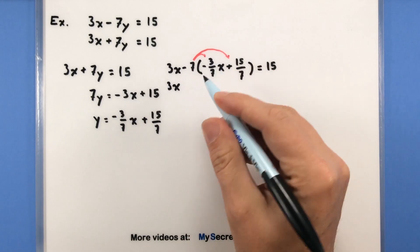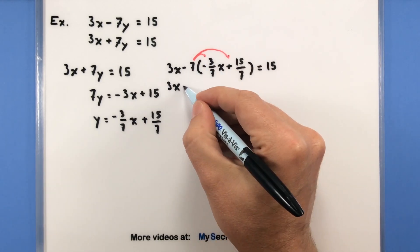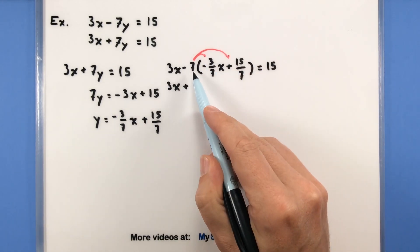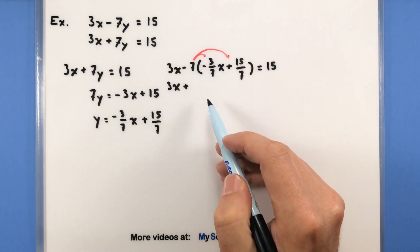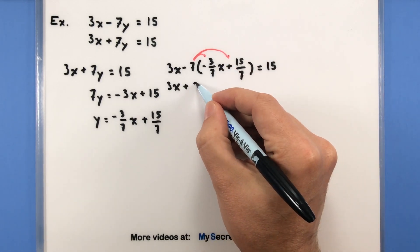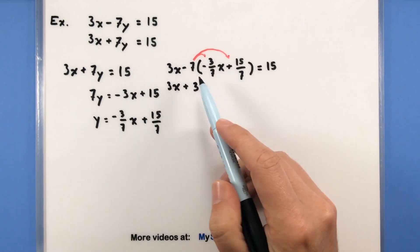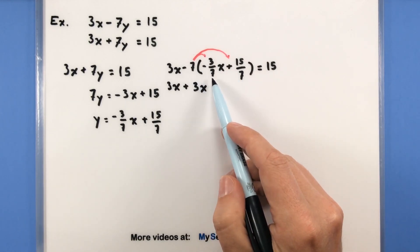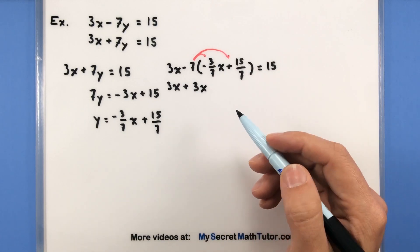So we still have a 3x here. Negative times a negative will give us a positive. This will give us a 21/7, which reduces. They'll reduce to just a 3. Another way we can view this is that this negative 7, that negative 7 will cancel out, and so we're only left with a positive 3x.